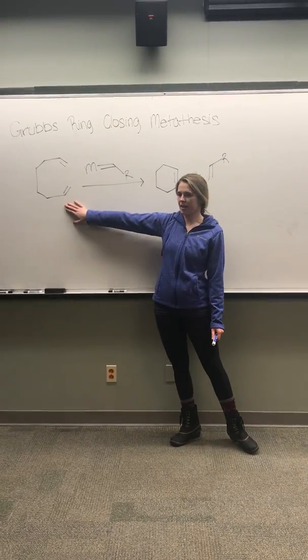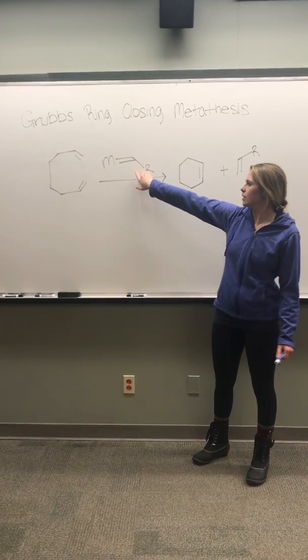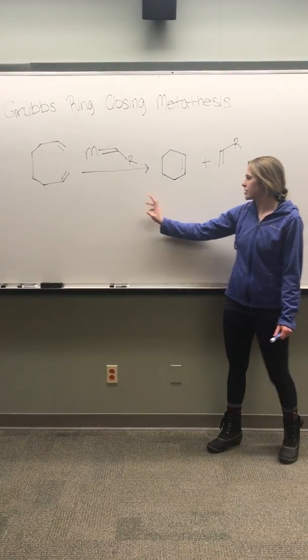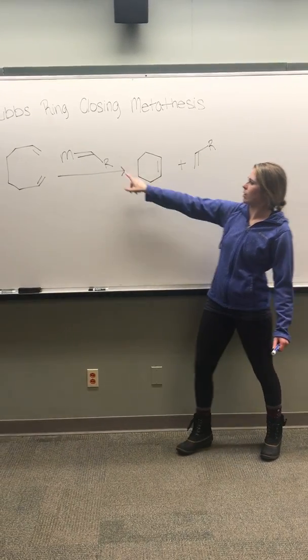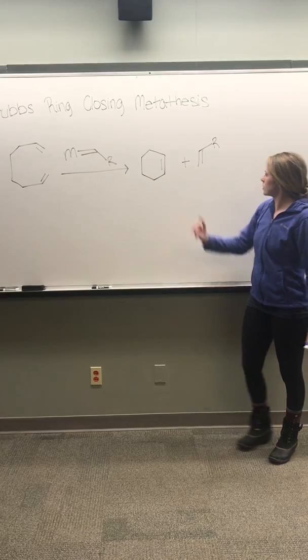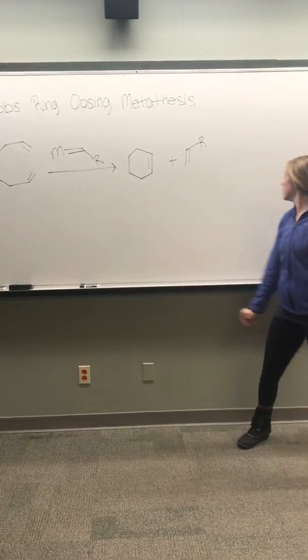Our starting material is this octadiene, and we have a metal M double-bonded to an R group. We end up losing two carbons to form this cyclohexene, and then we also have a byproduct from the R group without the metal. So we end up losing two carbons total, which is important to note.